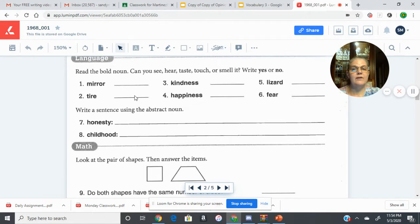Tire, like a tire on a bike or a tire on a car. Can you see it, hear it, taste it, touch it, or smell it? Some of those things might not be a good idea. If yes, you can write yes. If no, you don't need to write no. Number three, kindness. Can you see it, hear it, taste it, touch it, or smell it? Yes or no. Remember back to abstract nouns.